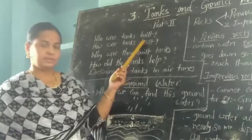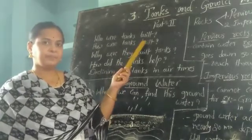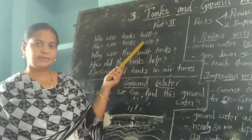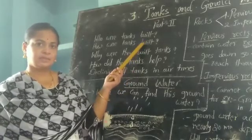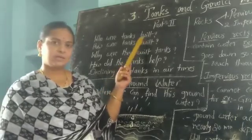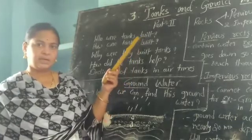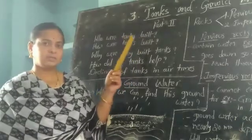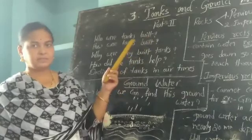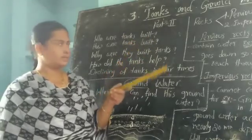The tanks were built by our ancestors and kings like the Kakatiya and Vijayanagara kings, military leaders, and Nayakas. They built tanks in order to irrigate the lands.